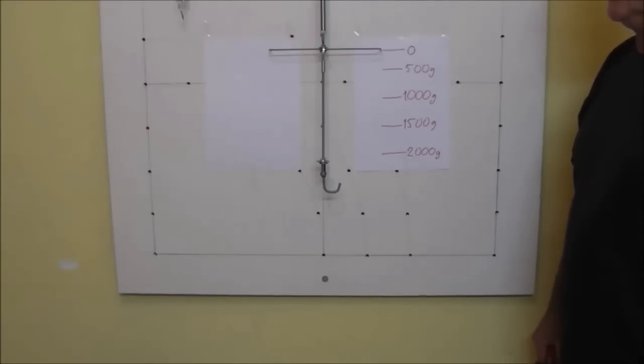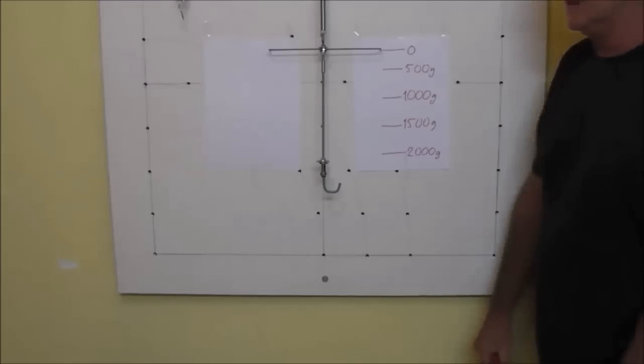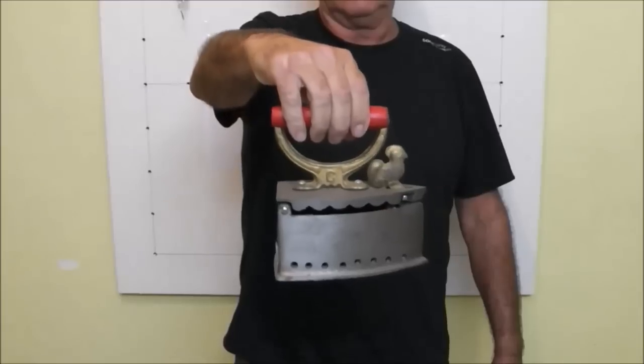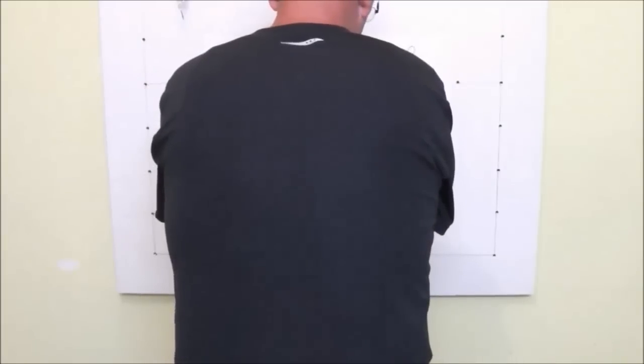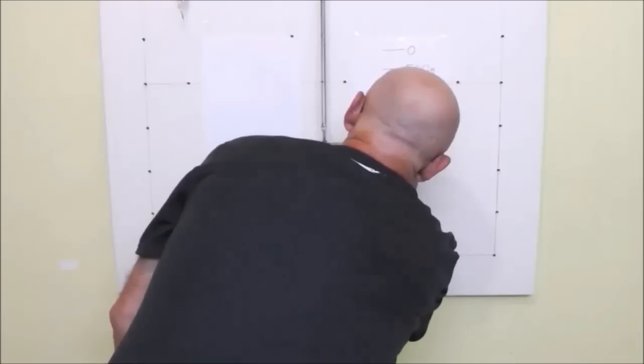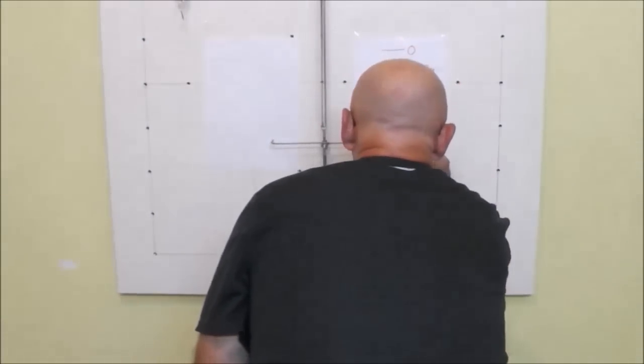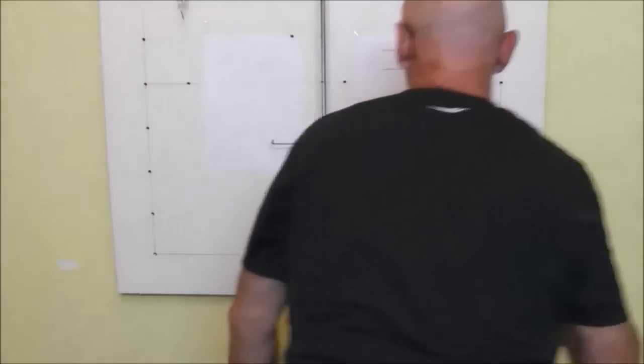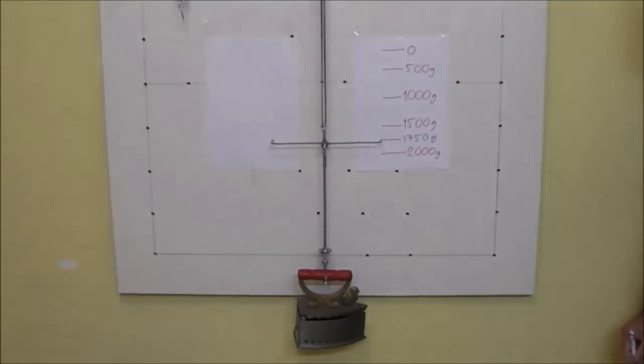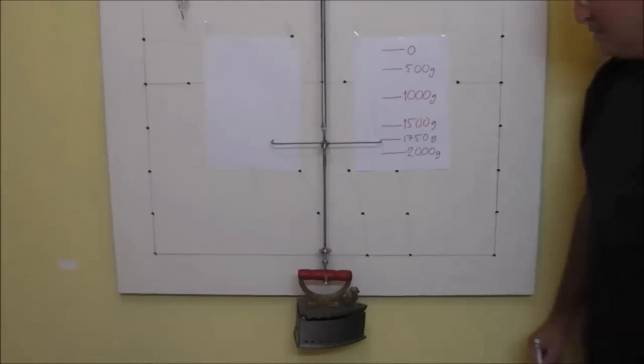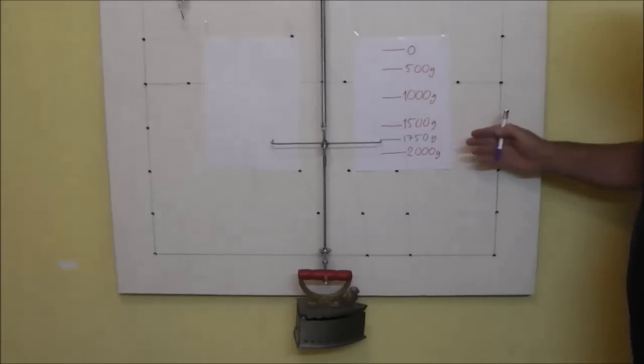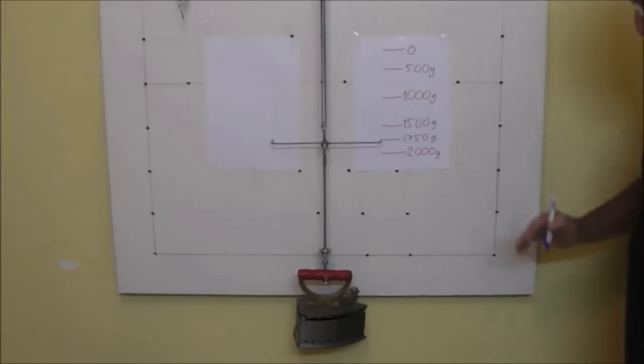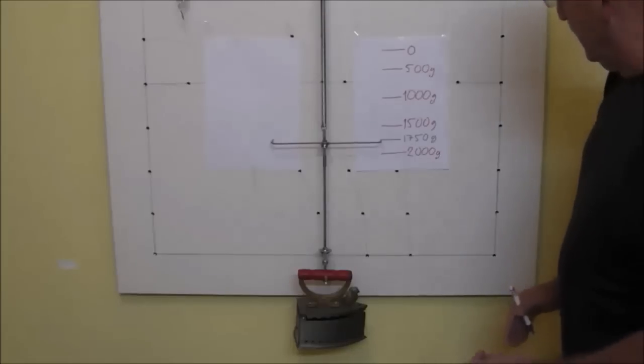Now, for example, we are going to weigh this nice old-fashioned iron press. Our coarse eye reading approximation is something in the middle between 1500 grams to 2000 grams, something about 1.75 kg.